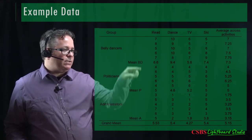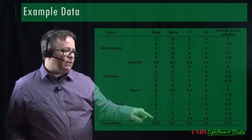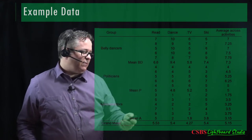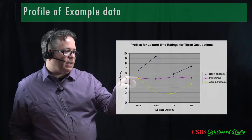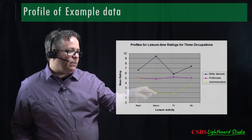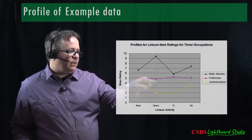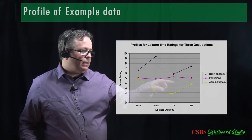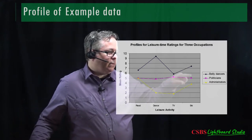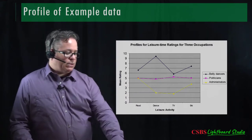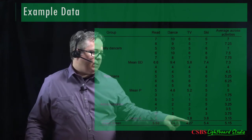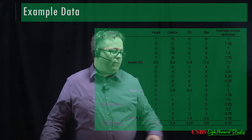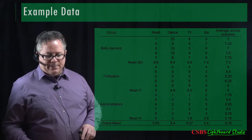Those means come from averaging 6.6, 5, and 5 to get 5.53; averaging 9.4, 4.8, and 2 to get 5.4; and so on. I was just visually finding an average between the three dots for each DV, which should get us more or less to these averages. All of this is compared to the grand mean of 5.15, especially for the univariate equal levels test. Everything else will be looked at as a multivariate test.